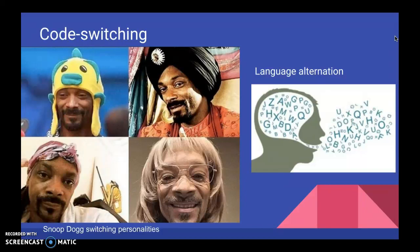For example, in The Hate You Give, Star is a different person when at home versus when she's at Williamson High, not only linguistically, but also personality-wise. And here we can also see that Snoop Dogg has clearly mastered the ability of code switching.